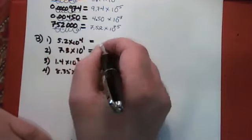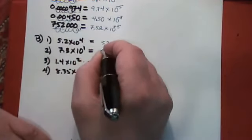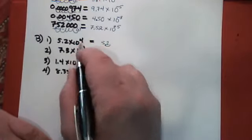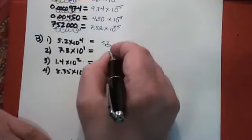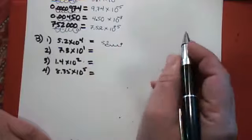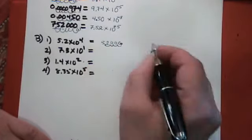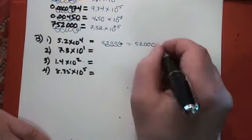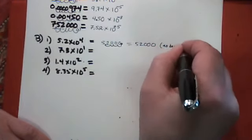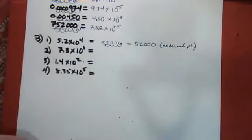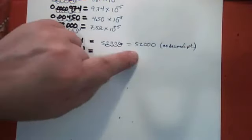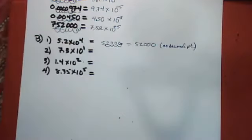5.2×10⁴ means the decimal point starts here and moves four spaces in the direction that makes the number bigger, because it's positive four. You fill in the empty spaces with zeros. In other words, that's 52,000. You don't put a decimal point in it, because that would increase the number of significant figures. The original number only had two significant figures, and 52,000 without a decimal point has two significant figures — you don't want to change that.